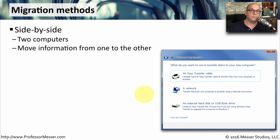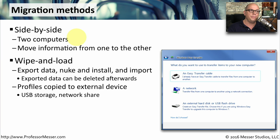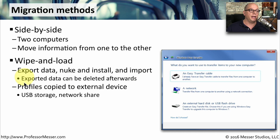There are different ways to migrate between operating systems on the same computer or between two separate computers. One way is a side-by-side migration, where you have two physical devices and simply connect them together to migrate information from one computer to the other. Another way is through a wipe and load, where you export data, completely erase everything on the existing computer, install the new operating system, and then import all of the information you previously saved. Since you are erasing everything, you'll need to save the information to a separate drive, such as a USB-connected hard drive or a network share.